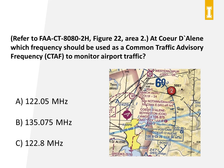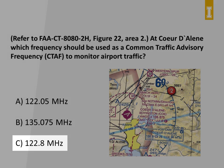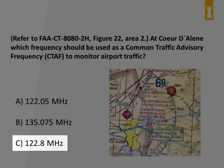Here's another question from testing supplement figure 22, area 2: 'At the Coeur d'Alene airport, which frequency should be used as the common traffic advisory frequency to monitor airport traffic?' The answer is also C. For Coeur d'Alene, the UNICOM station is the CTAF, denoted by the symbol in the airport information. For the other frequencies: 122.05 is the frequency to contact Boise flight services, and 135.075 is the AWOS weather station at Coeur d'Alene — useful, but not going to have air traffic information on it.